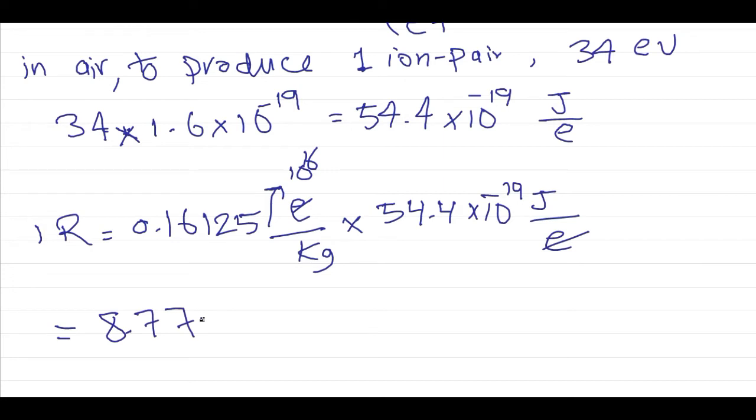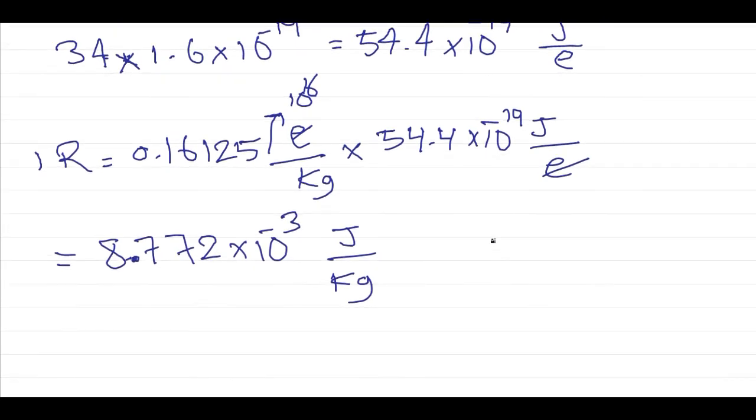From the units of radiation exposure or absorbed dose, we know that one Gray equals one joule per kilogram. So one Röntgen equals 8.772 times 10 to the minus 3 Gray.